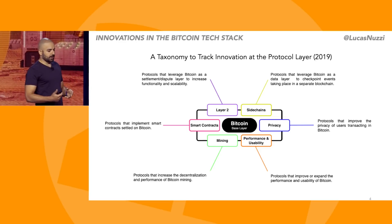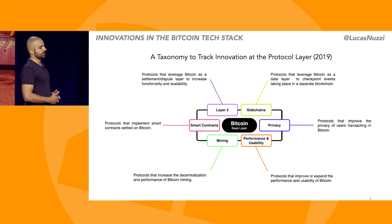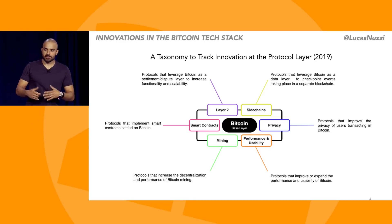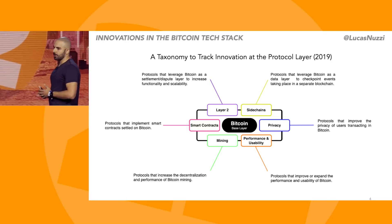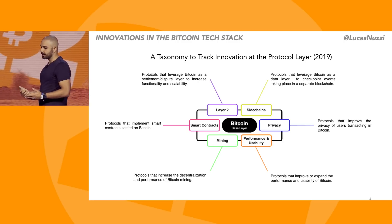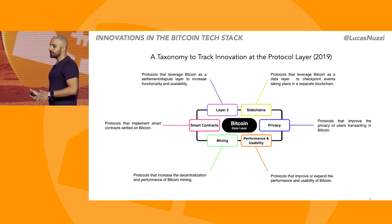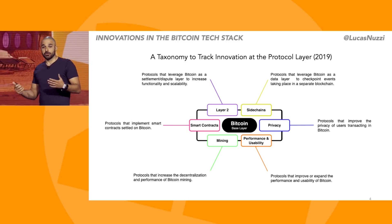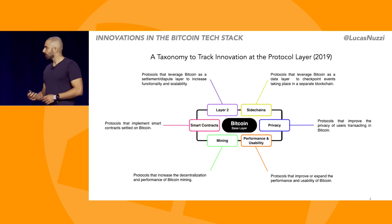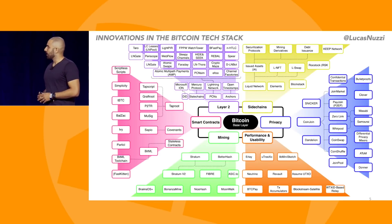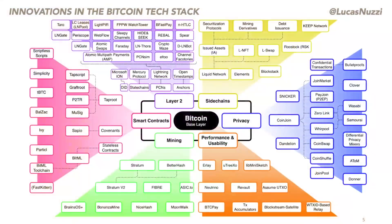When I started applying this taxonomy to the ecosystem of protocols in Bitcoin back in 2019, I was tracking about 30 protocols, which was impressive at the time. But this year I went through the effort of doing that again, and what I found was incredibly interesting. There has been an explosion in protocols built on Bitcoin, especially over the past year or so, after the activation of Taproot.